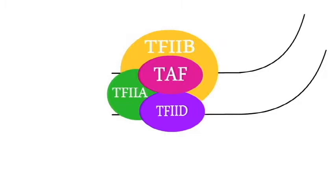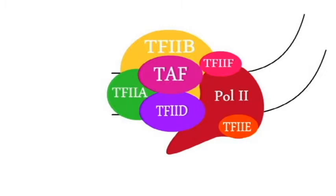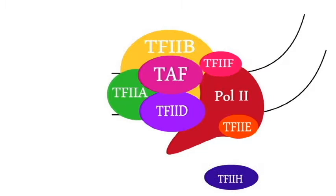TF2B binds downstream to the TATA box and provides a surface that is recognized by RNA polymerase II. TF2F is involved in the recruitment of RNA polymerase II. TF2E is the intermediate in the recruitment of TF2H. TF2H has helicase activity.